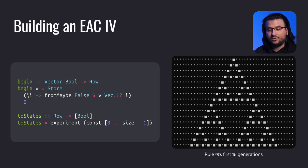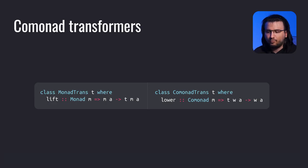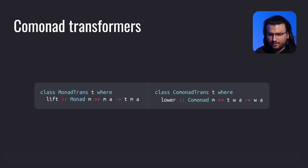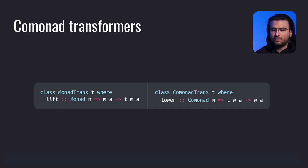To the right are the first 16 generations of the rendered Rule 90, creating a structure reminiscent of the Sierpinski triangle. Let's talk about transformers. Previously we had monad transformers — data types that accept a monad as a parameter and return a monad, possibly introducing a modification to the behavior of the underlying monad. They can also instantiate the type class MonadTrans, whose only function, lift, accepts the underlying monad and returns the constructed transformer. The dual of lift, if we reverse the arrow, is called lower — which obtains the underlying comonad from the comonad transformer. It is defined in the type class ComonadTrans.